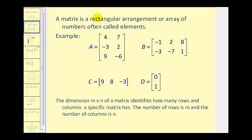A matrix is a rectangular arrangement or array of numbers that are often called elements. Here are four examples of matrices. Notice that usually capital letters represent a matrix and the arrangement of numbers are enclosed in square brackets as we see here.